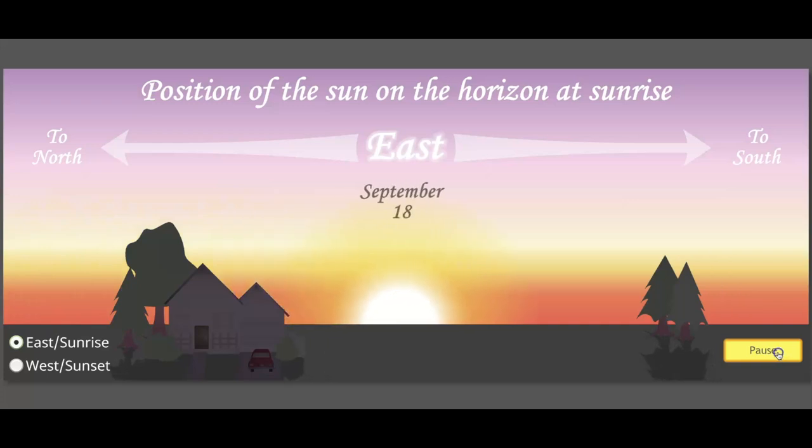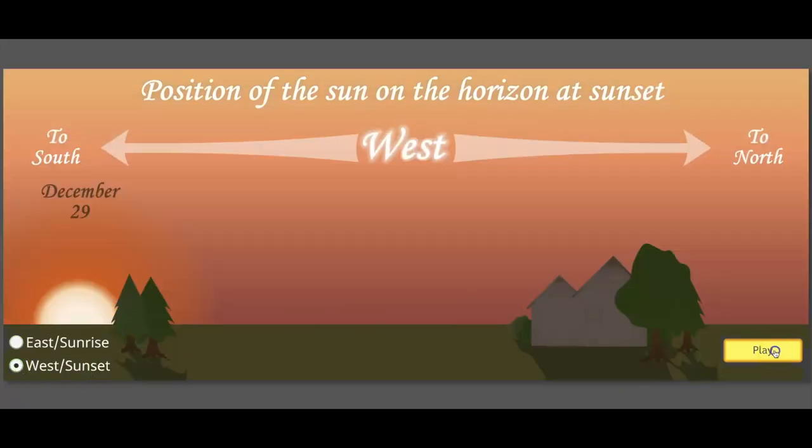We're arriving towards the autumn equinox. And then if we hit play again, this is about the time of the winter solstice, where the sun is at its southernmost point along the horizon. And remember, you can switch this as well. And you can see how the sun changes around sunset time.